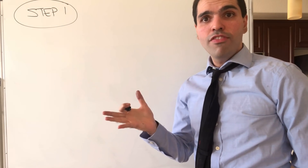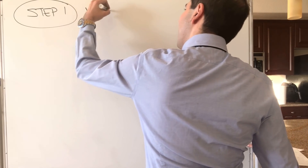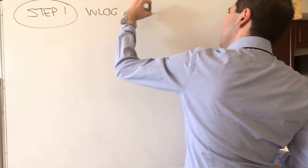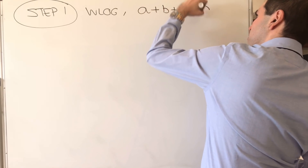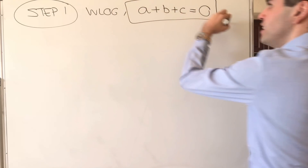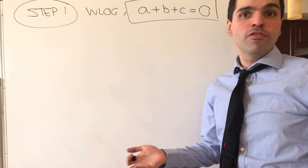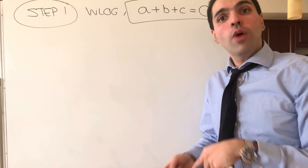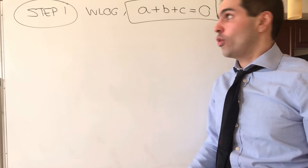First of all, let's simplify our work a little bit. Without loss of generality, we may assume that A plus B plus C is 0, which can be interpreted in different ways. Either the average of A, B, C is 0, or the triangle ABC has its center of mass at the origin.